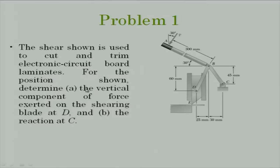What we are asked in this question is, for this simple system, to find out what is the vertical component of force exerted by the blade at D. Because there is no friction between these two rigid supports, this vertical force automatically implies what is the shearing force. Second, we want to find what are the reactions at C.